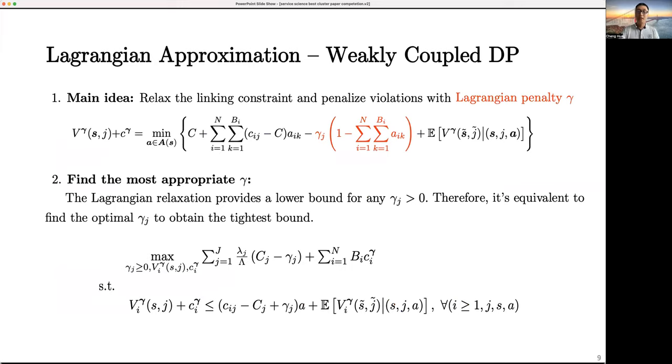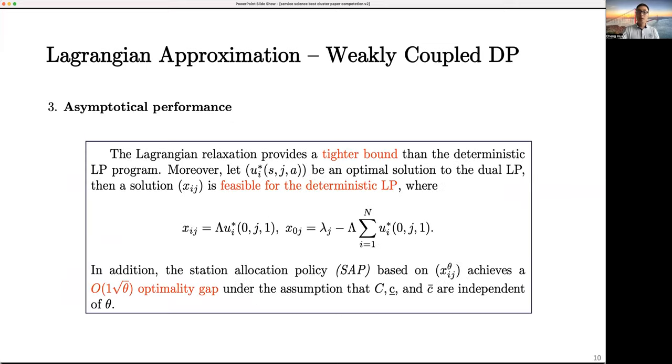Lagrangian relaxation with respect to weakly-coupled DP is another approximation method we propose. This approach relaxes the linking constraint using a Lagrangian penalty to penalize violations. It also offers a lower bound, and the linear program helps to find the best penalty for the tightest bound. We first prove that Lagrangian relaxation provides a tighter bound than the deterministic LP. Moreover, we construct a similar SAP policy, which is also asymptotically optimal with the same convergence ratio.